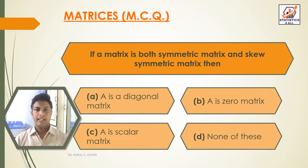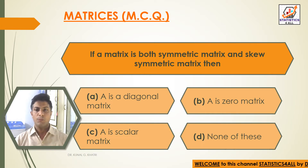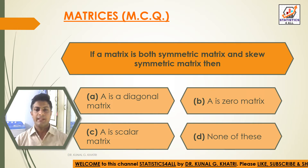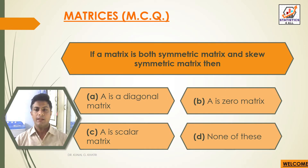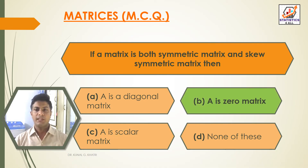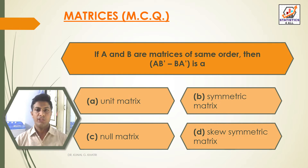Next question: if a matrix is both a symmetric matrix and a skew-symmetric matrix, then — option A: A is a diagonal matrix; option B: A is a zero matrix; option C: A is a scalar matrix; option D: none of these. The answer is option B, that is A is a zero matrix, if a matrix is both symmetric and skew-symmetric.